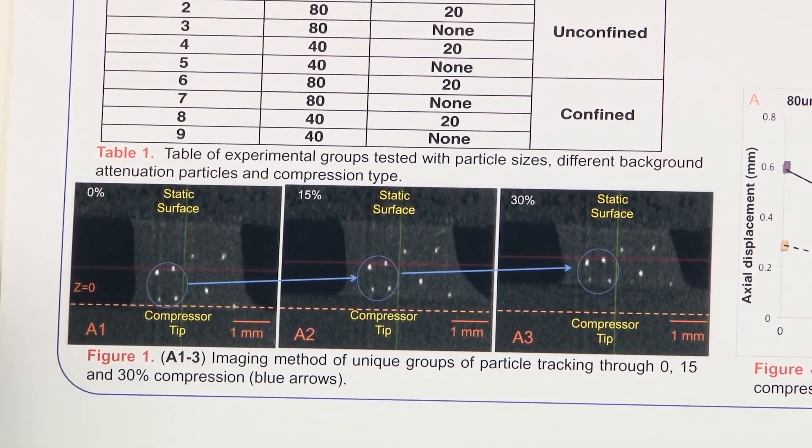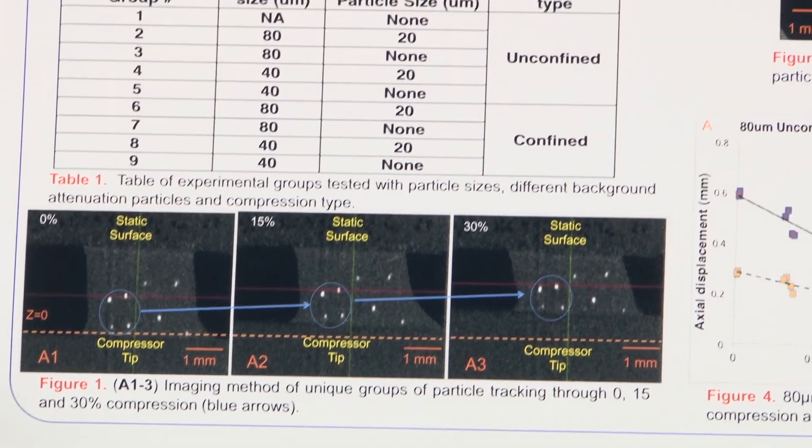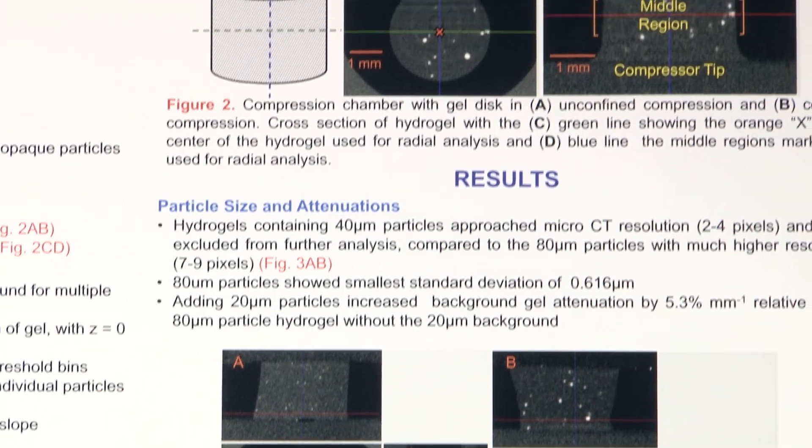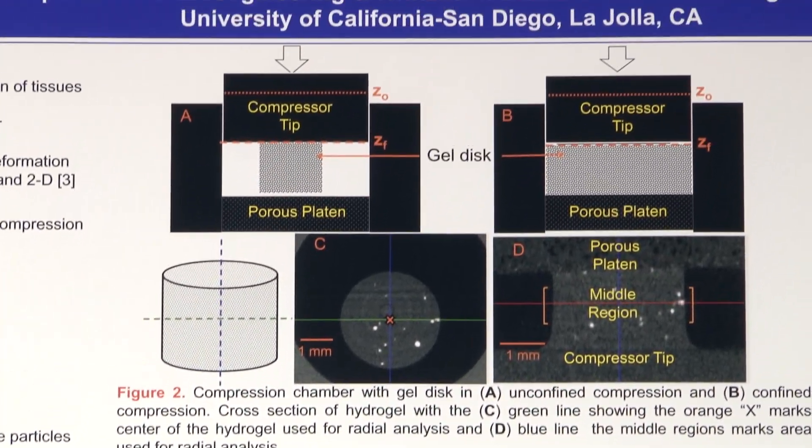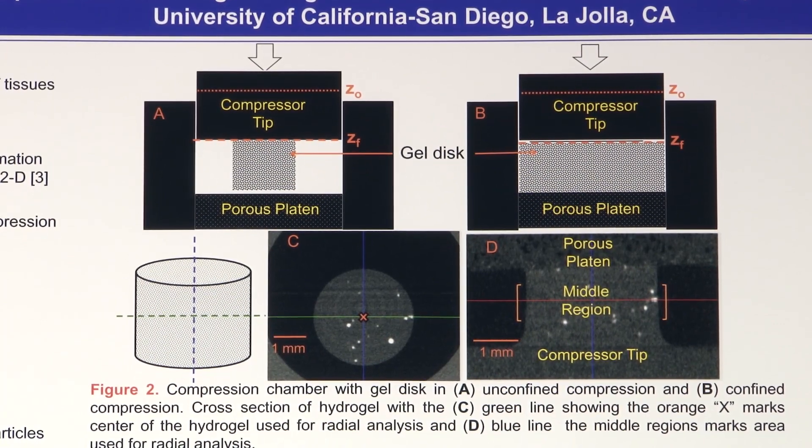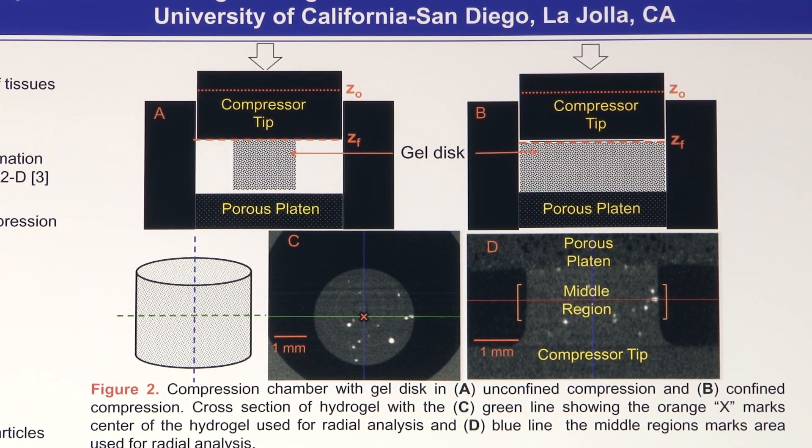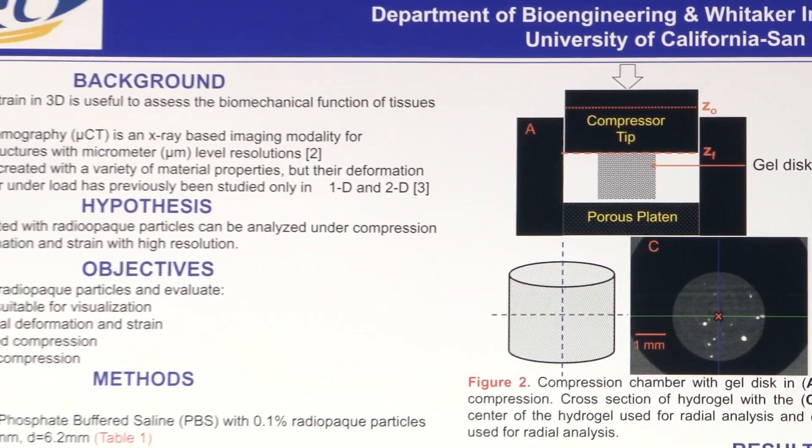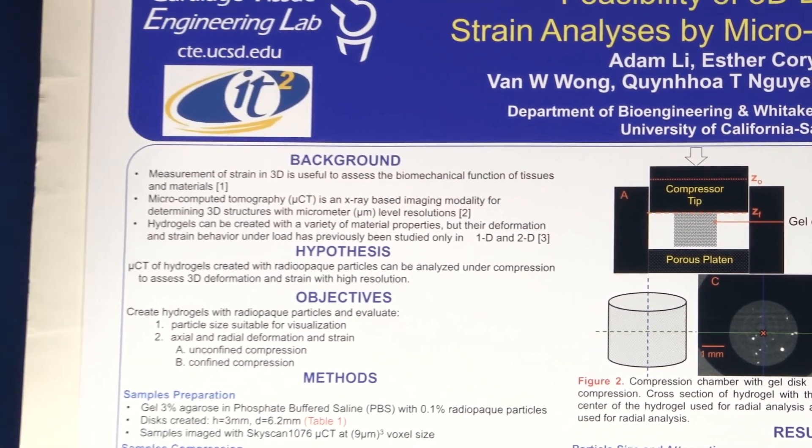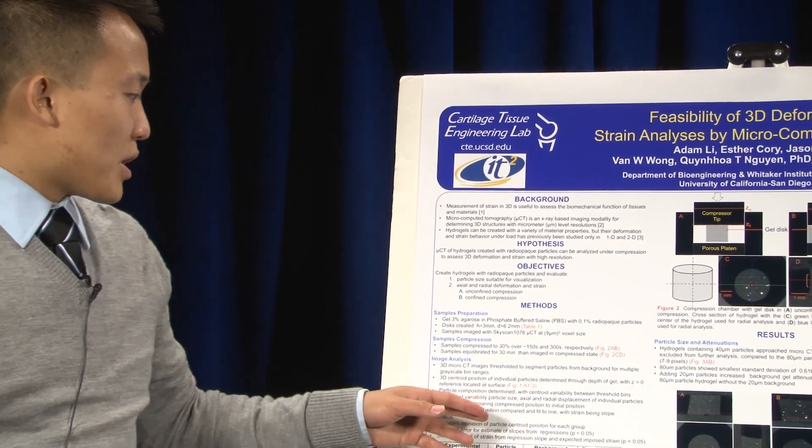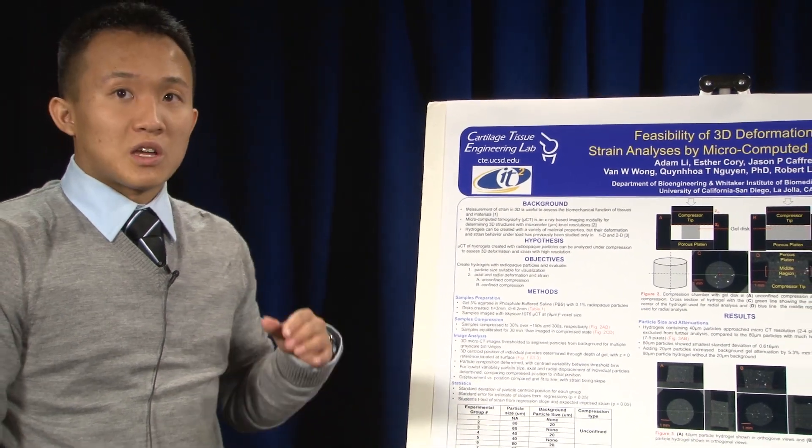Particle composition was determined with centroid variability between thresholding bins, which means we were looking for standard deviation of how these particle positions change with different thresholding ranges in order to determine whether or not this actually was accurate enough or high enough resolution for us to use in future studies. For the lowest variability particle size, we determined the axial and radial strain behaviors. In order to determine that, we compared compressed position against initial position.